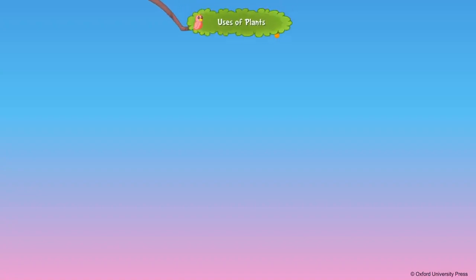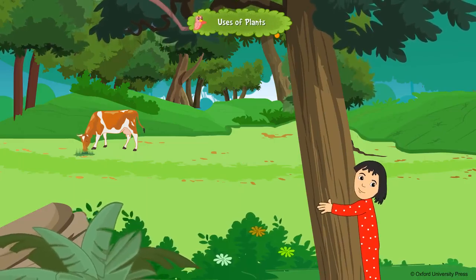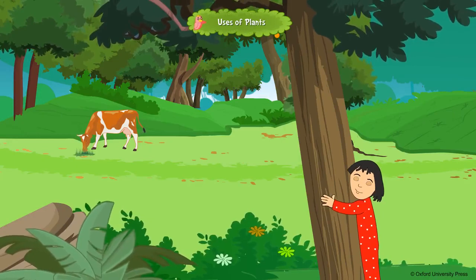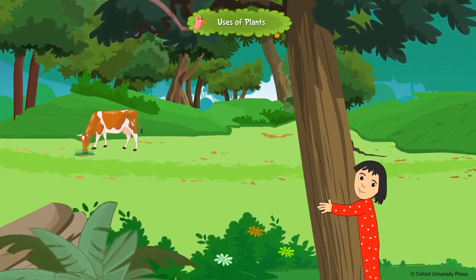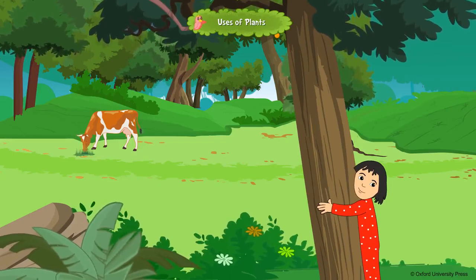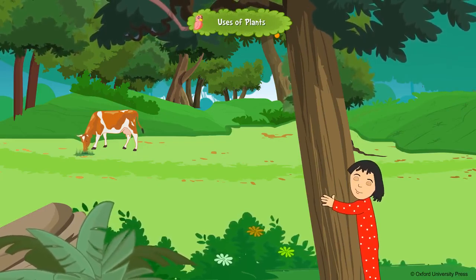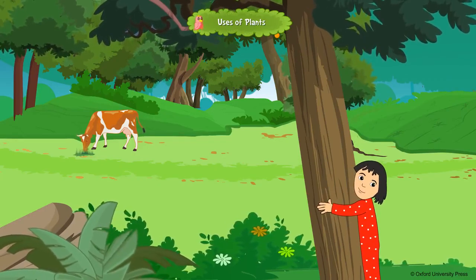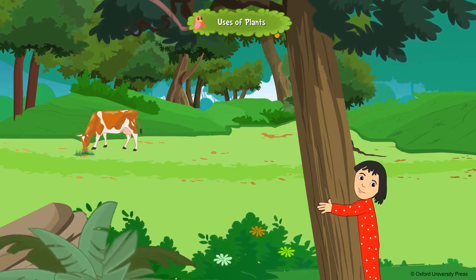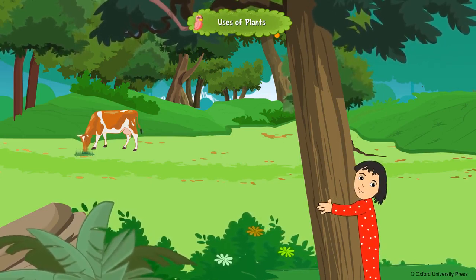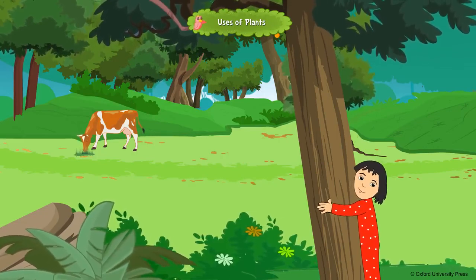Uses of plants: trees are among our best friends, they help us in many ways. Trees and forests are like the lungs of the earth — they purify the air by taking in carbon dioxide and giving out the oxygen we breathe. Different parts of a plant are useful to us in different ways.